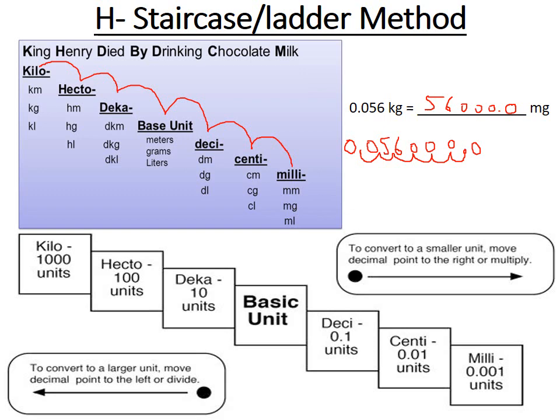Notice that when we move the decimal to the right, you drop the leading zeros that were in the original number — they were just placeholders to show the decimal position. So the result is 56,000 milligrams, not 0056000.